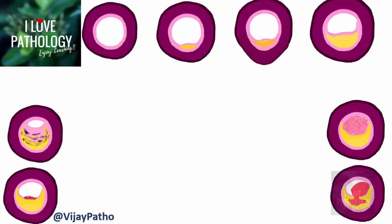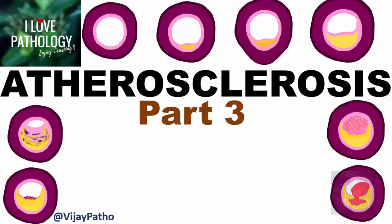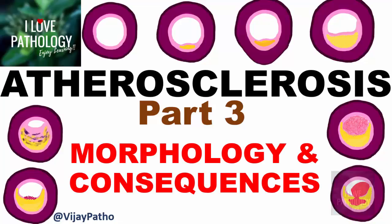Hello everyone. Welcome to this short tutorial from Pathology Made Simple at I Love Pathology. Today's topic is the third part of atherosclerosis. In the first part we discussed the risk factors. In the second part I discussed in detail the pathogenesis of atherosclerosis and the steps in atheroma formation. In this part we will be discussing in detail about the morphology and consequences of atherosclerosis.